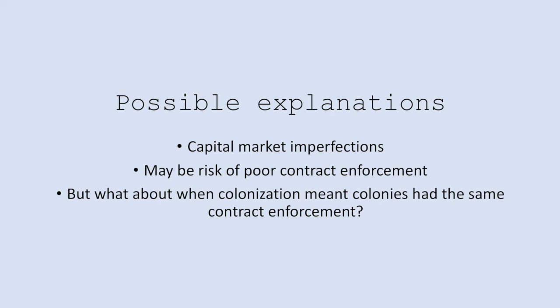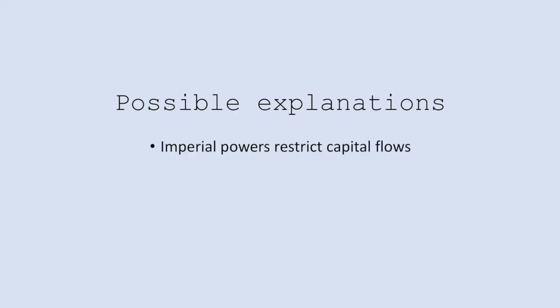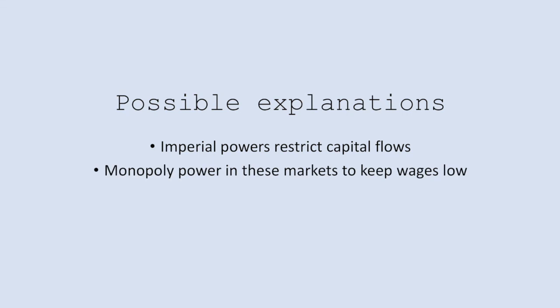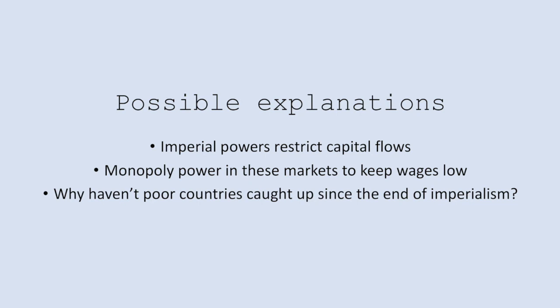So why didn't countries equalize their marginal product of capital when we had colonization? This brings about the fourth hypothesis, which involves the colonial powers argument. It says that when we had colonization, the imperial powers would restrict capital flows on purpose to poorer countries. This was because these powers had monopoly power over capital flows, whereas they had monopsony power over labour markets domestically. By restricting capital flows, this meant that they could keep wage rates very low in the colonies, and so there remained a cheap form of labour, which maximizes the profits of the colony.